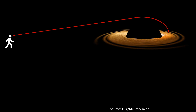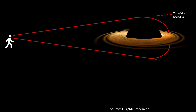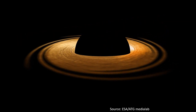This makes our brain think that the top of the back disc is here. Light from the bottom section will also curve towards us, making our brain think that the bottom of the back disc is here. So coming back to the original picture, we'll see that the top of the back section of the disc will appear here and the bottom of the back section of the disc will appear here.